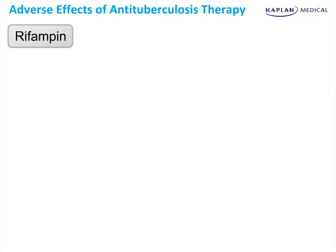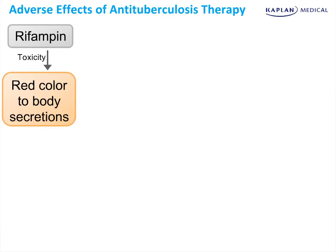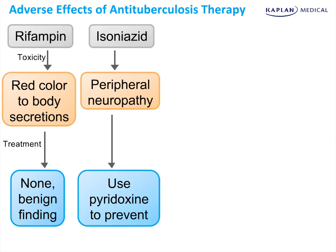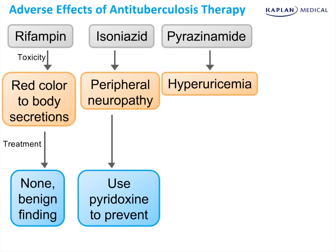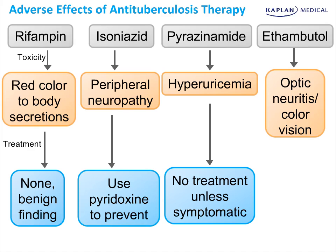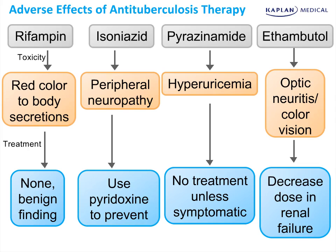Individual adverse effects include the following. For rifampin, toxicity is a red color to body secretions, and the treatment is none because that's simply a benign finding. For isoniazid, you can sometimes see peripheral neuropathy — use pyridoxine to prevent this from happening in the first place. Pyrazinamide's main toxicity is hyperuricemia, so you don't have to treat these patients unless they become symptomatic with gout, in which case you treat them the same as a gout flare. With ethambutol, optic neuritis and changes in color vision is the main side effect — simply decrease the dose if the patient is in renal failure.